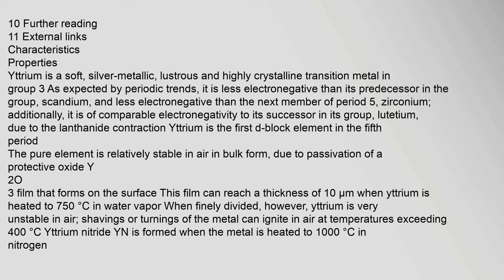Yttrium is a soft, silver metallic, lustrous and highly crystalline transition metal in group 3. As expected by periodic trends, it is less electronegative than its predecessor in the group, scandium, and less electronegative than the next member of period 5, zirconium. Additionally, it is of comparable electronegativity to its successor in its group, lutetium. Due to the lanthanide contraction, yttrium is the first d-block element in the fifth period.